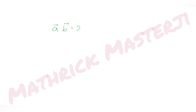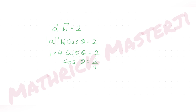Now using the other given condition: a · b = 2. If the angle between a and b is θ, then |a||b|cosθ = 2. With |a| = 1 and |b| = 4, we get cosθ = 2/4 = 1/2, which gives θ = 60° or π/3.